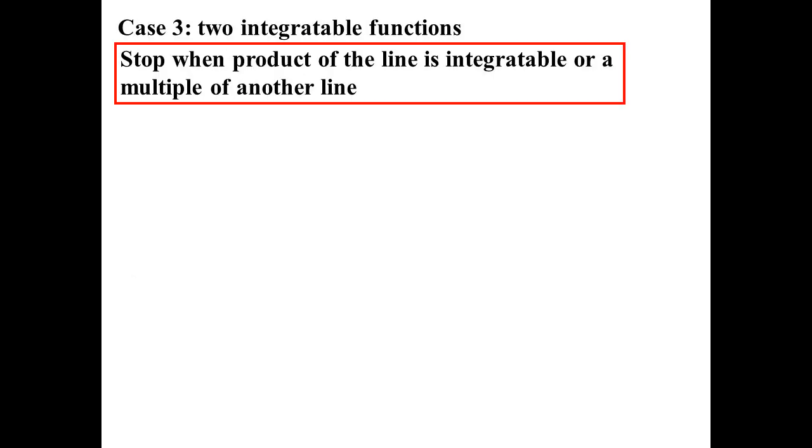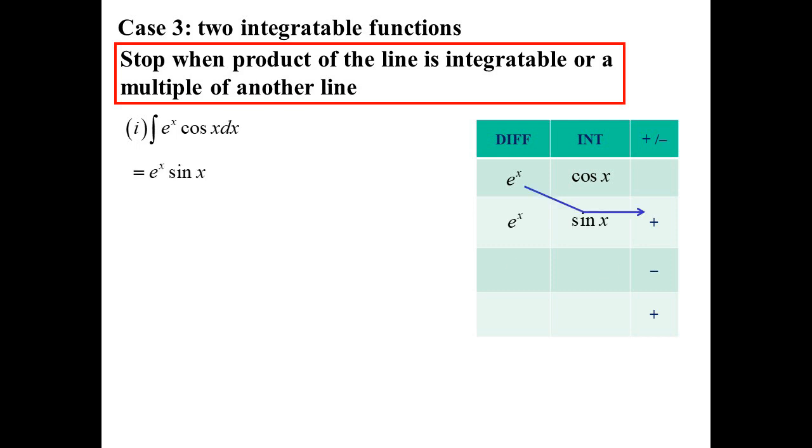Well what happens when you've got two integratable functions? So again you will stop when the product of the line is integratable or a multiple of another line. So it's just like the one before. E to the X cos X. So I'm going to go this way around. Still can't do that one. But tic-tac-toe I'll do the first bit. Let's go again. E to the X minus cos X. Oh I've got a multiple of what I had. So that's good.